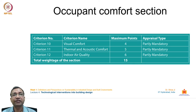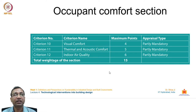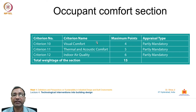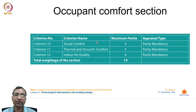The occupant comfort section has three criteria: visual comfort, thermal and acoustic comfort, and indoor air quality — with 12 total points. Visual comfort includes providing views of greenery or activity outside, acknowledging psychological benefits. Research recognizes that being confined in spaces with no visual connection to the outside world negatively affects human wellbeing.